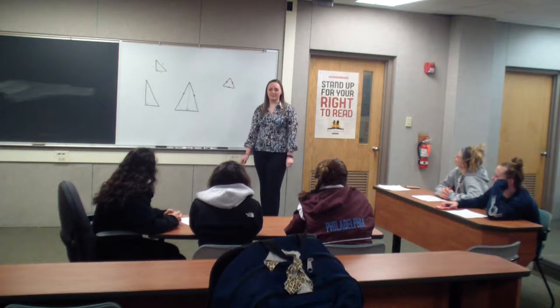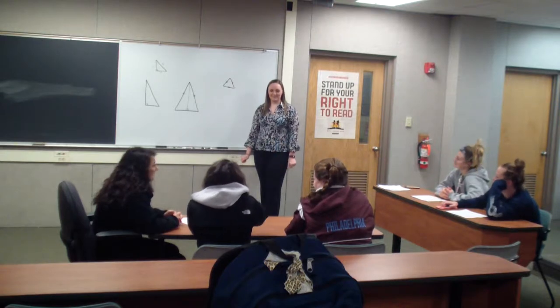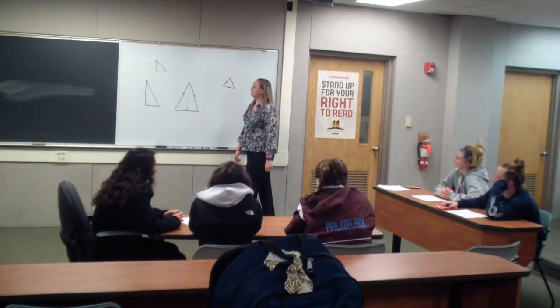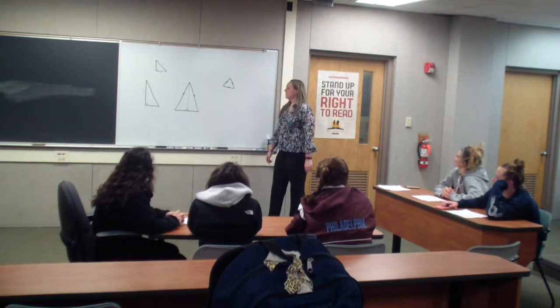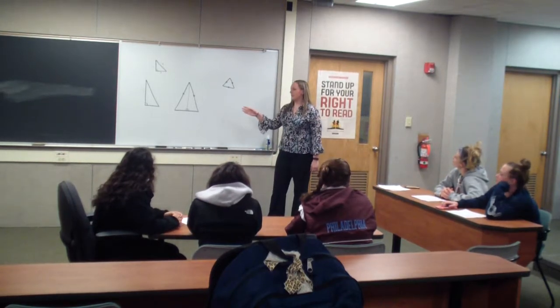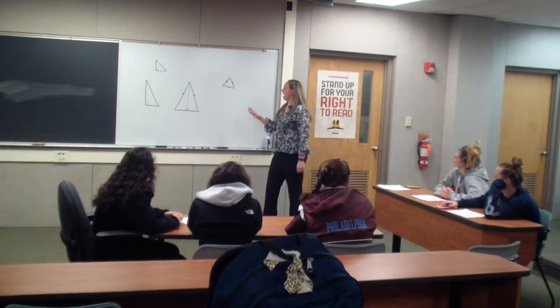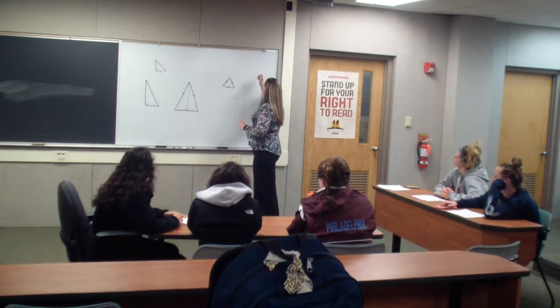And the last type of triangle? Elise? A right triangle. And it's the one all the way to the left, because it has a right angle. Yes. So all three types of triangles have three angles, and they all add up to 180 degrees.